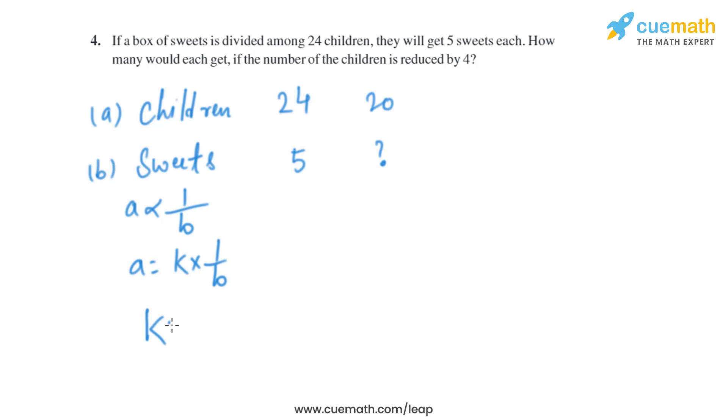From here we'll find the value of k, that is a into b. We have the value of a, we have the value of b, we can find the value of k. So from here we'll get the value of k, that is 120.